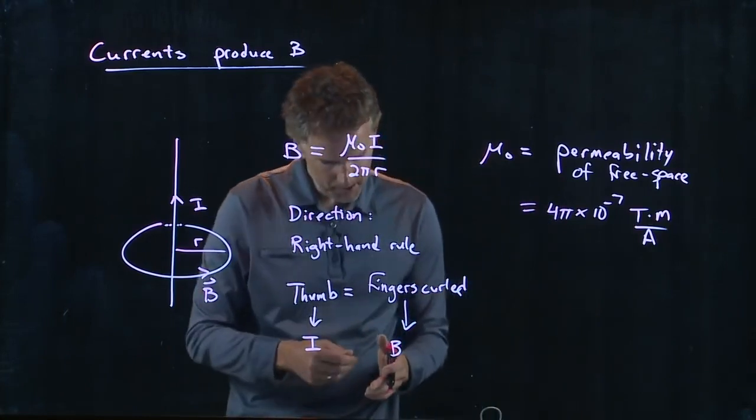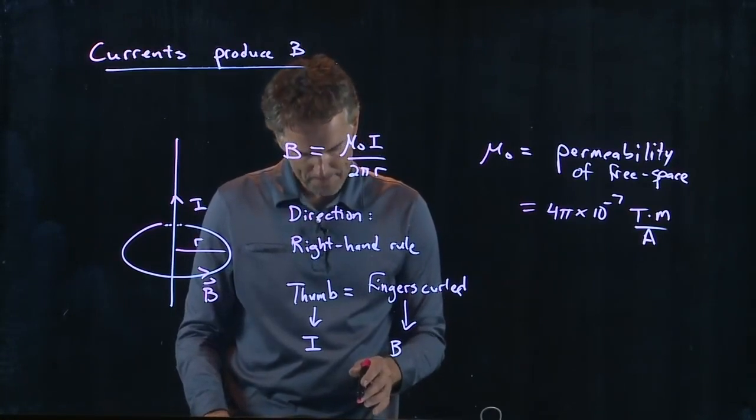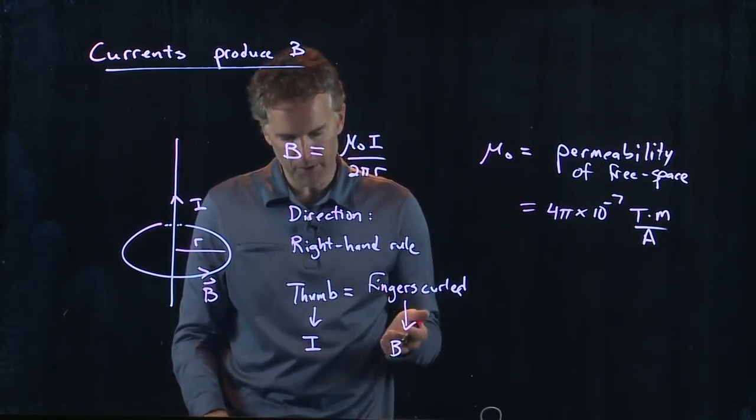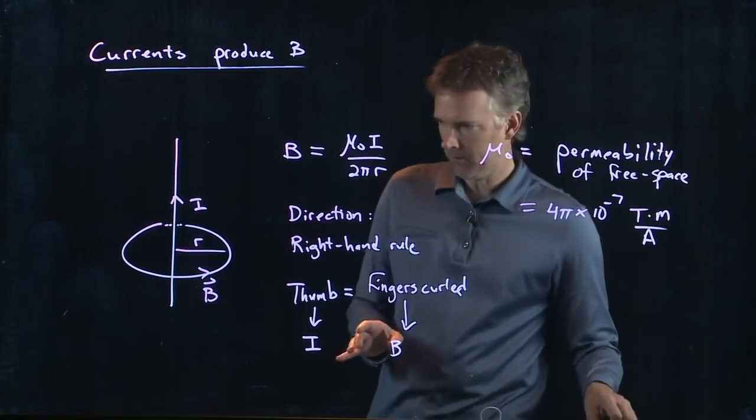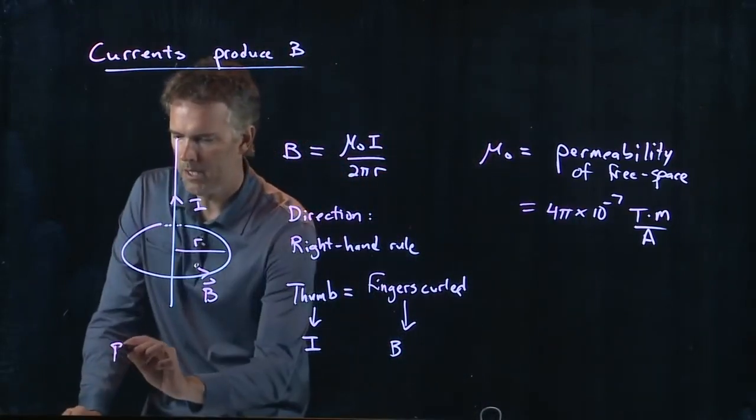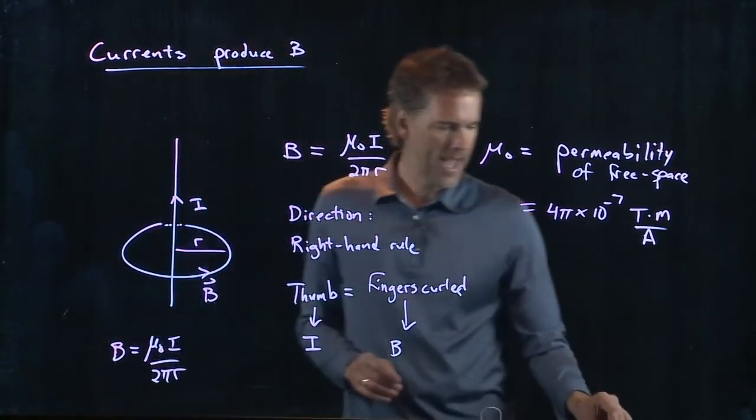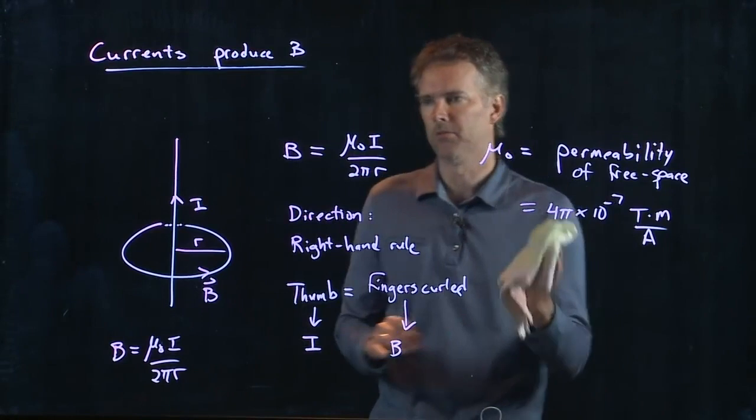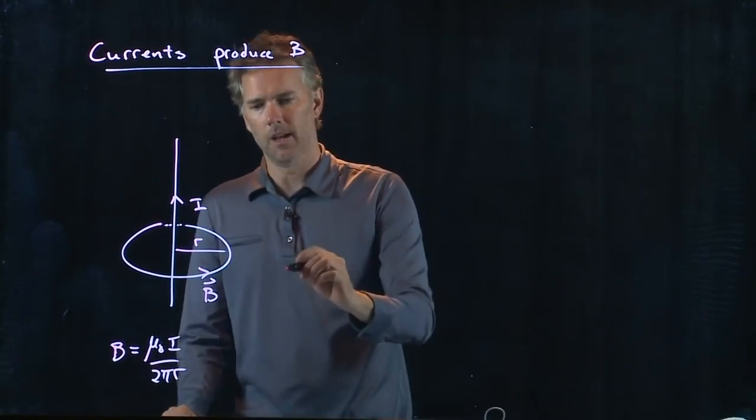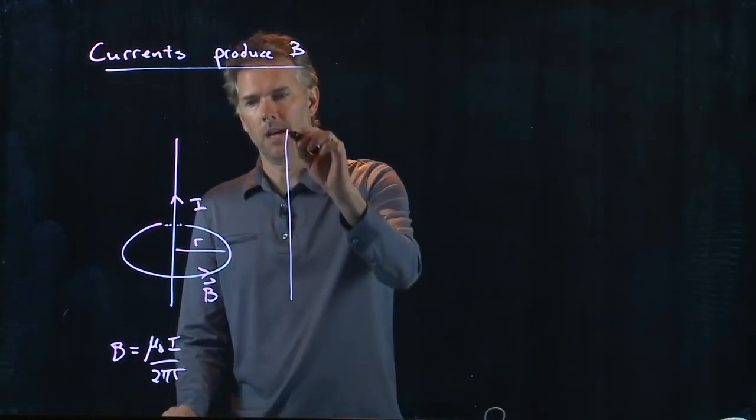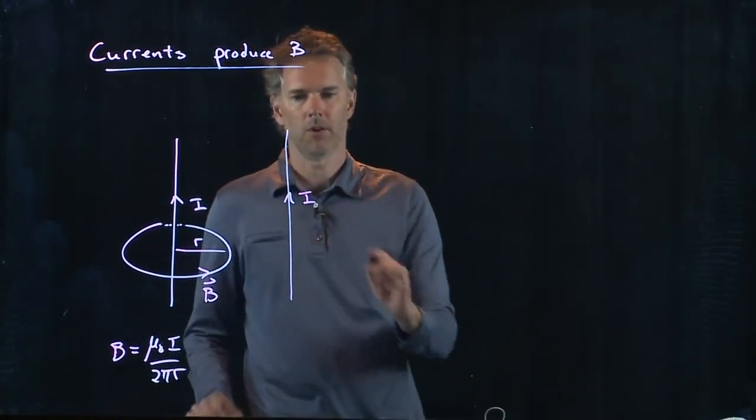Maybe that'll help us because it's telling us we have a long current carrying wire, and then there is some force per unit length on the second parallel wire. So let's hang on to some of this. We're going to say B equals mu-naught I over 2 pi R. And now let's add a second wire and see if we can make some sense of it.